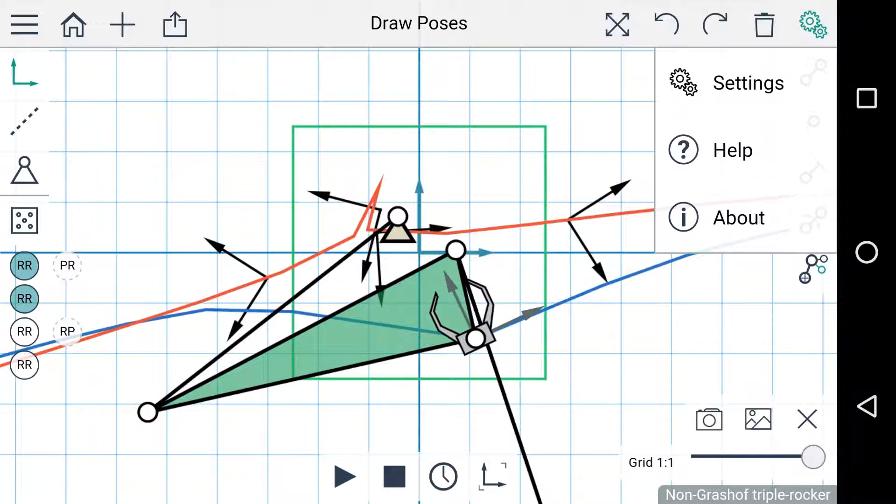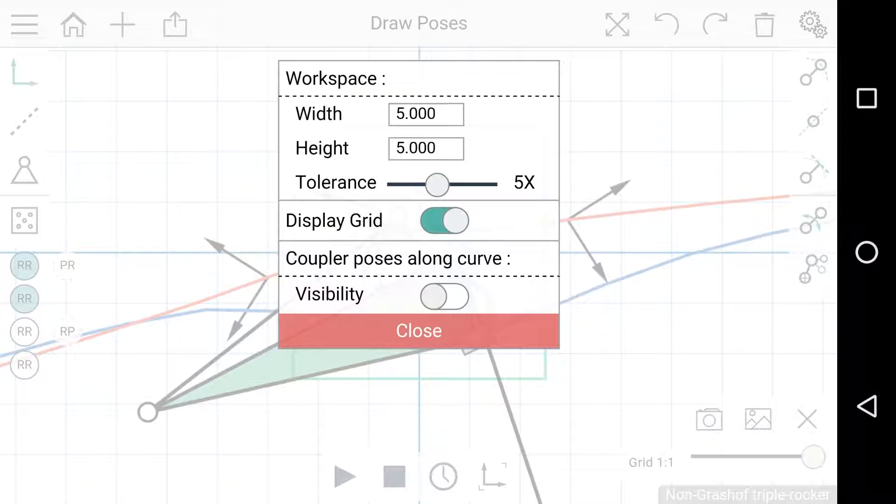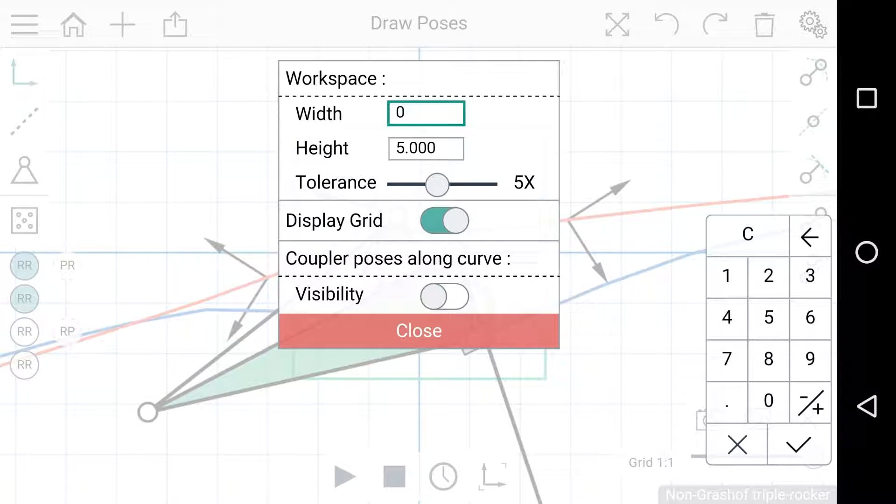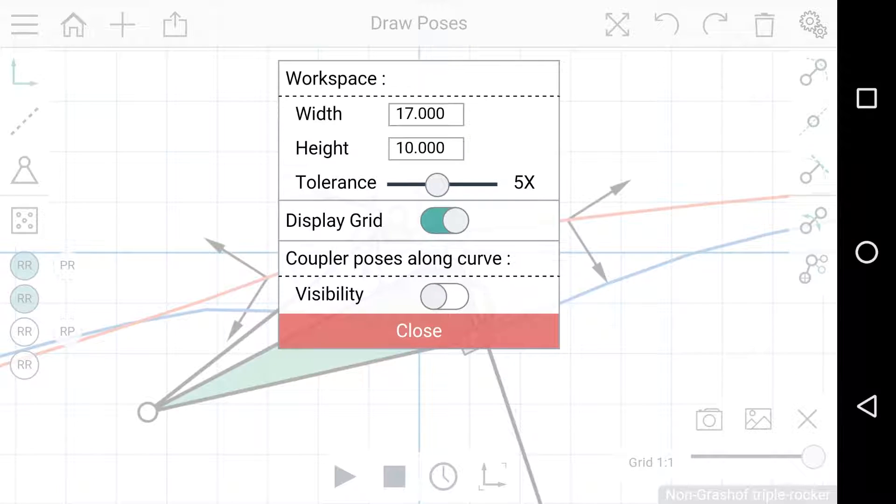To explain the other reason I'm going to go back into the settings menu and I'll change this back. You can see below here we have a tolerance slider. These three controls, the width, height, and tolerance of the workspace, have an effect on the way dyads are interpreted in MotionGen.